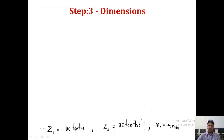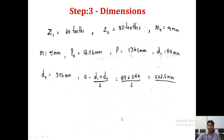Summarize all gear dimensions: Z1 = 20 teeth, Z2 = 80 teeth, normal module Mn = 4 mm, transverse module M = 4.45 mm, normal pitch Pn = 12.56 mm, transverse pitch P = 13.97 mm, D1 = 89 mm, D2 (calculated), and equivalent teeth Z1_e and Z2_e.